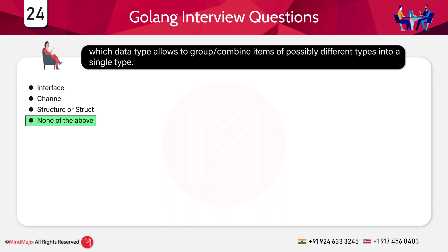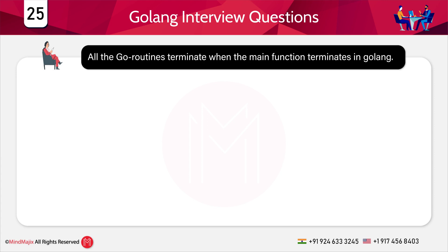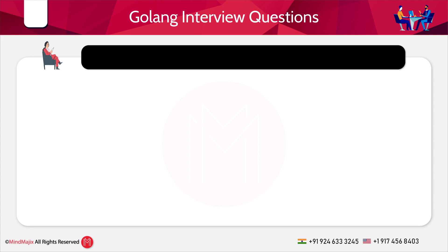All goroutines terminate when the main function terminates in Golang — true or false? Options: a) true, b) false. The answer is a) true. Whenever the main function terminates, all goroutines present in that program will terminate. In fact, the main function is also called the main goroutine.